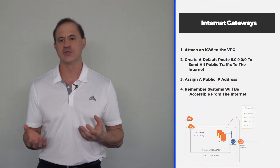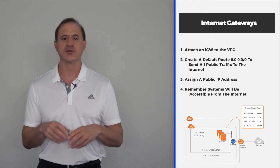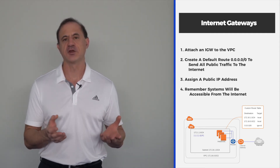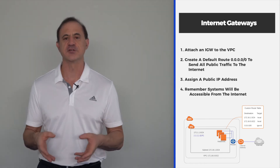The next component is an internet gateway. If you have systems on the AWS network and you want to truly connect them to the internet — meaning completely exposed — you're going to have to use an internet gateway. A system that needs to be completely on the internet will go through an internet gateway and will need a public IP address, and the gateway will need a public IP address as well. You attach the internet gateway to your VPC, create a default route pointing to it, assign the IP address, and then configure security, because once you're on the public internet your systems can be attacked quite easily.